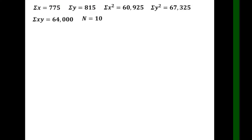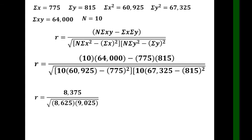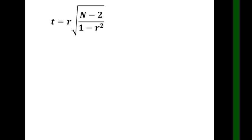Substituting into the Pearson r formula: the numerator gives 875. The first bracket yields 8625 and the second bracket yields 9025. Multiplying gives approximately 77 million. Dividing gives a computed r of 0.95, which is interpreted as a very strong positive correlation between the preliminary and periodical exam results.